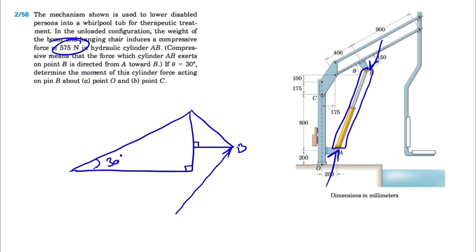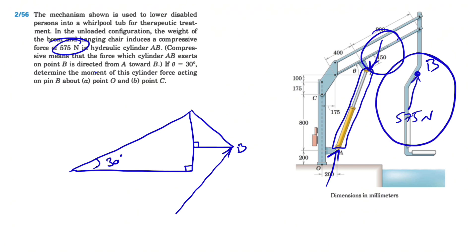The cylinder is in compression, meaning the force that the cylinder applies at point B has to be in the opposite direction based on Newton's law, with the same magnitude. So we have this force of 575 Newton applied at point B. The question explains the direction from A to B — a compressive force means the force which cylinder AB exerts on point B is directed from A toward B.